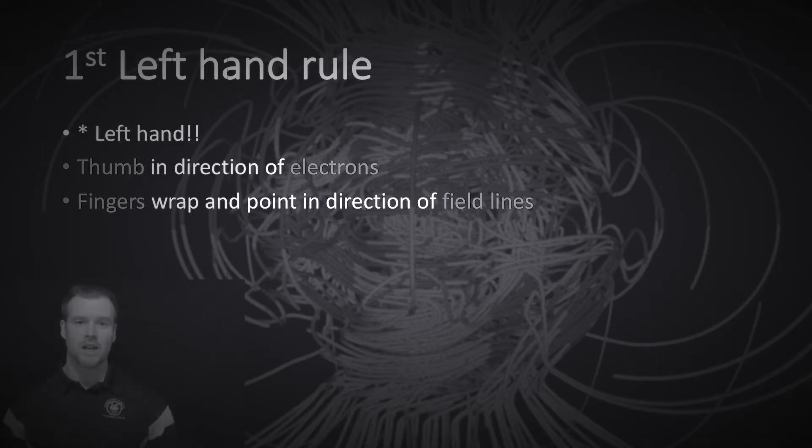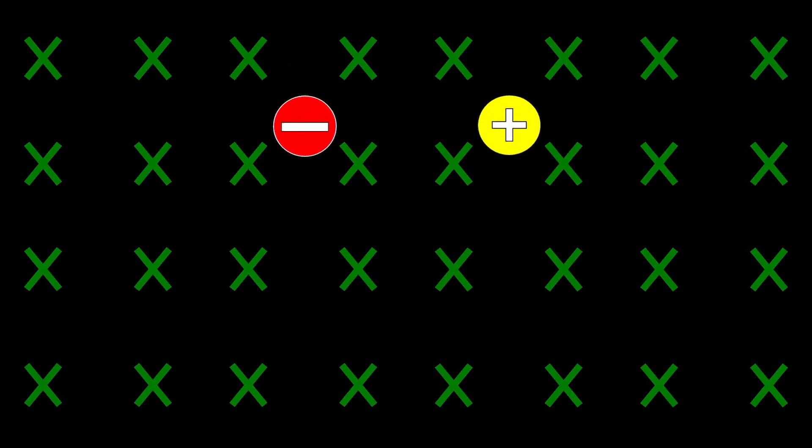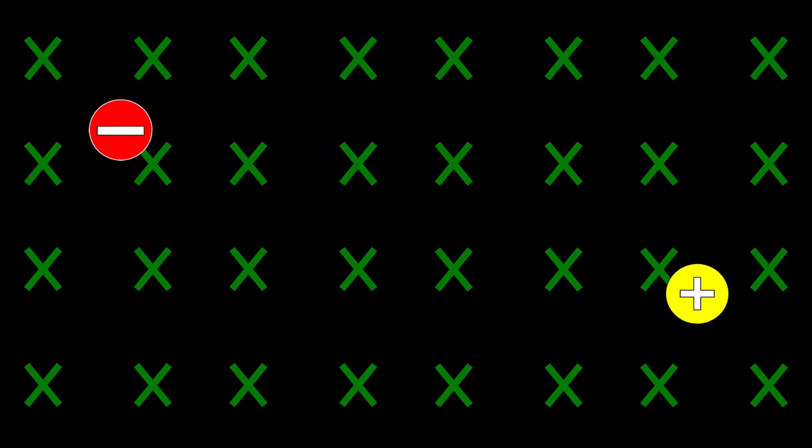In the last lessons we talked about the three hand rules that you can use for understanding electromagnetism. We used the third hand rule to analyze the force that a charged particle feels when moving through a magnetic field. It led us to the conclusion that if a charge is moving perpendicular to a magnetic field, it will undergo a circular motion. And today we're going to look at current going through a wire that is in a magnetic field.